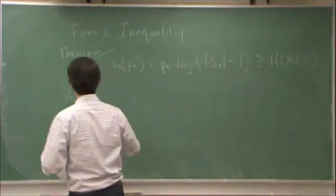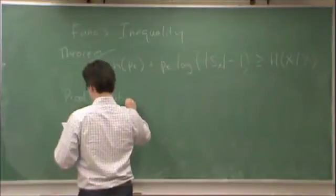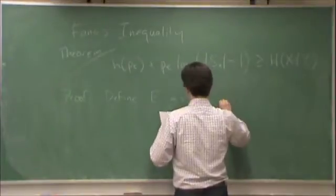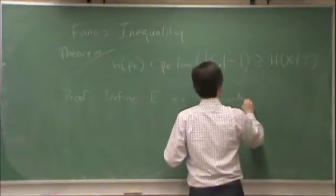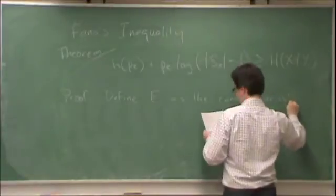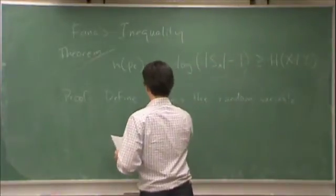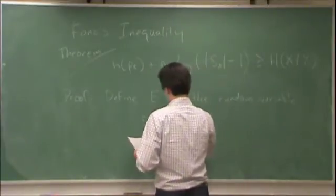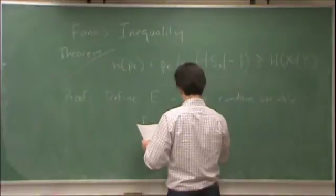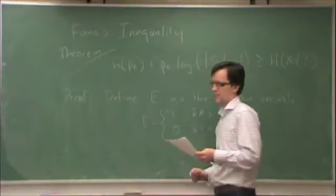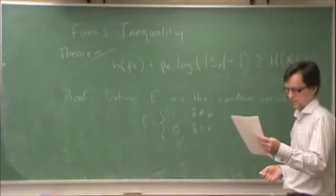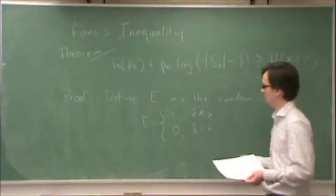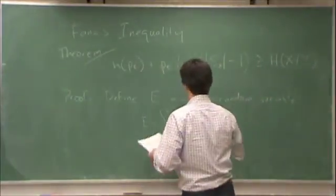The proof. Okay, let's define e as the random variable. e equals one if x hat is not equal to x, and zero if x hat is equal to x. In other words, this is the random variable that indicates an error. So, errors occur randomly, and e is the associated indicator random variable that will be one if an error occurs.